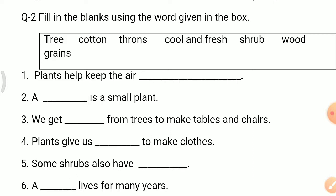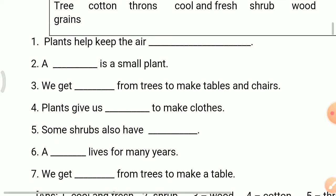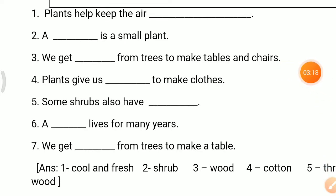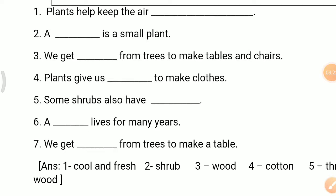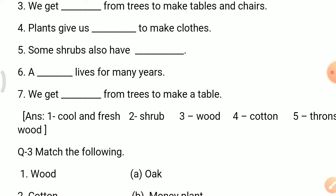Number 4: Plants give us ___ to make clothes. To make clothes, what do plants give us? The answer is cotton. Plants give us cotton to make clothes. Number 5: Some shrubs also have ___. The answer is thorns. Thorns means spikes. Some shrubs also have thorns. Number 6: A ___ lives for many years. The answer is trees. A tree lives for many years. Number 7: We get ___ from trees to make a table. The answer is wood.